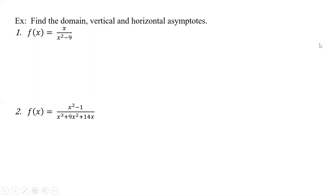All right, so now we're going to work some exercises. Here we're supposed to find the domain, the vertical and horizontal asymptotes. To do that, we need to factor. So let's rewrite this as x over — this is the difference of squares — so that's x plus 3, x minus 3.